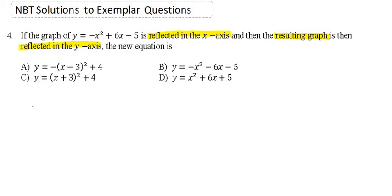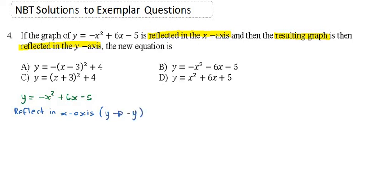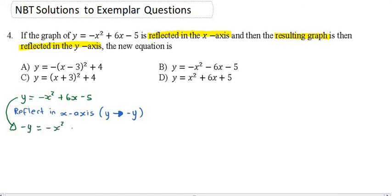So let's begin. We've got an equation given: y equals minus x squared plus 6x minus 5. We need to know how to reflect in the x-axis first. Our rule tells us that when we're reflecting in the x-axis, the y-values will become minus y. So if we look at the original equation, the y will be minus y, and everything else will stay the same when we are reflecting in the x-axis.